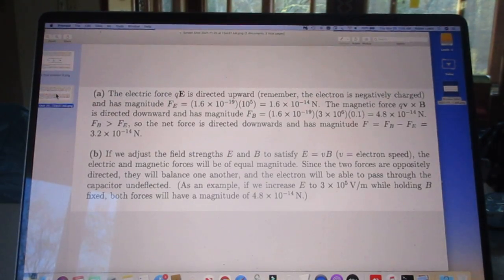Now we go to the solutions. Many of you have this right, by the way. First, we have to calculate what the force is, the net force on the electron. The electric force, QE, is directed upwards. Remember, the electron is negatively charged, and you see the magnitude there of the force.